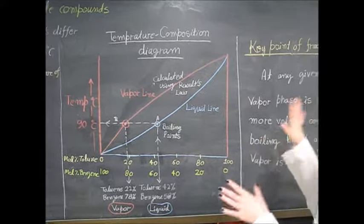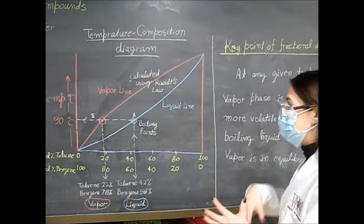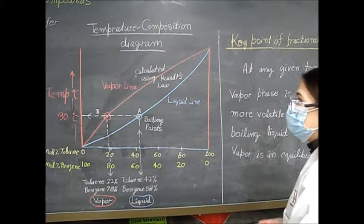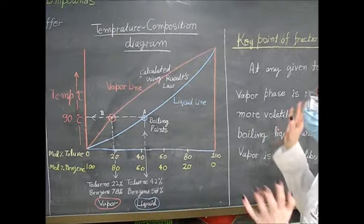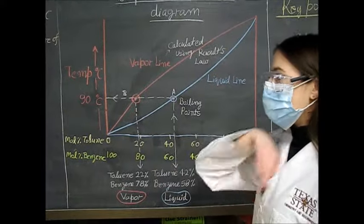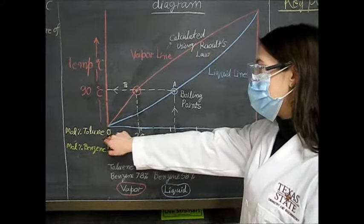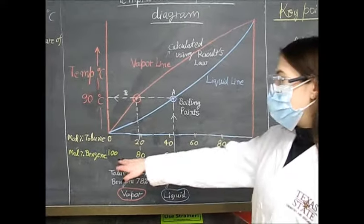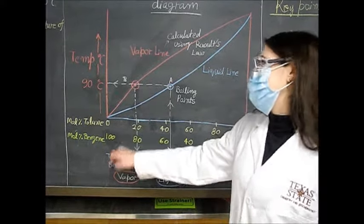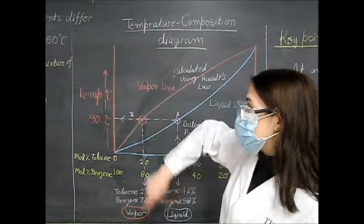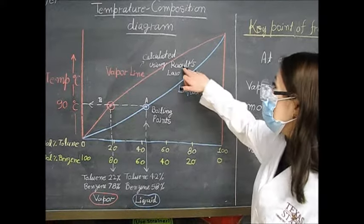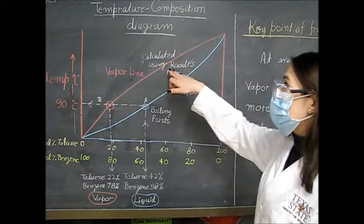We can use a temperature-composition diagram to assess the composition of the mixture at different points in the process. On the x-axis we have the mole percent of each compound. Using toluene and benzene as our example, toluene runs 0 to 100% and benzene runs in reverse, because when there's no toluene there's 100% benzene. The y-axis is temperature. The two lines on this diagram are the liquid line and the vapor line, calculated using Raoult's Law.